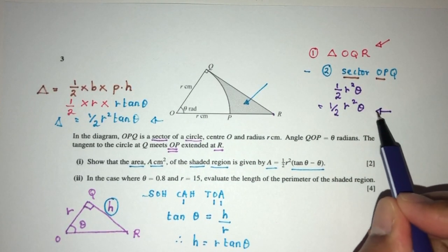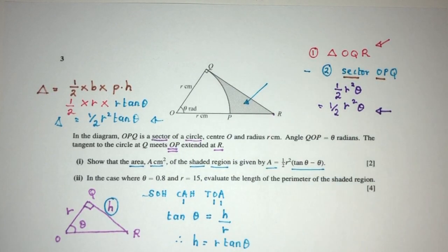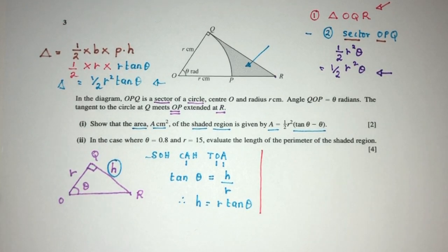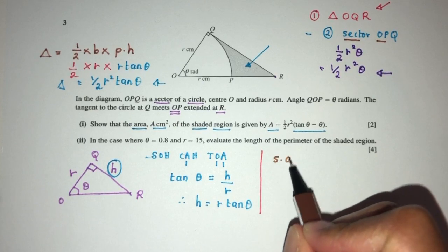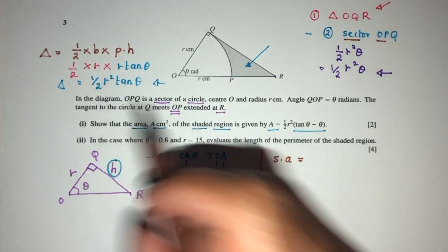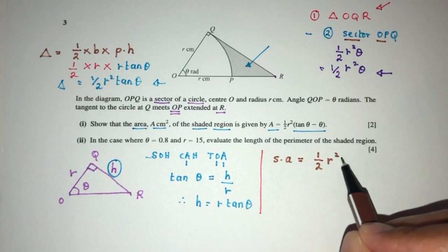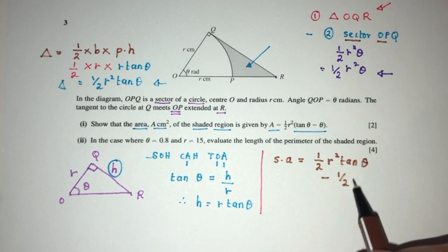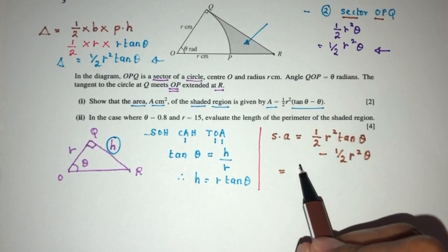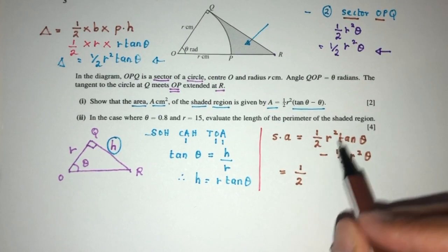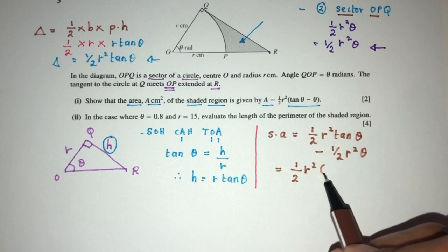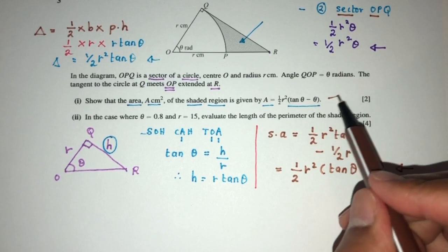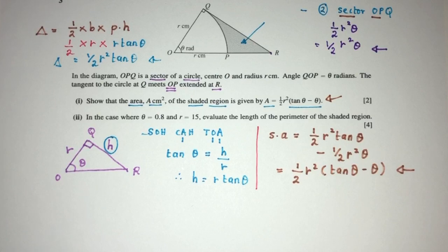Now let me replace everything back in the main equation. The shaded area is area one minus area two: ½R²·tan θ minus ½R²θ. Factorizing, take out half and R squared — which are common to both — and we're left with tan θ minus θ. So A = ½R²(tan θ − θ), which is shown as required for your two marks.